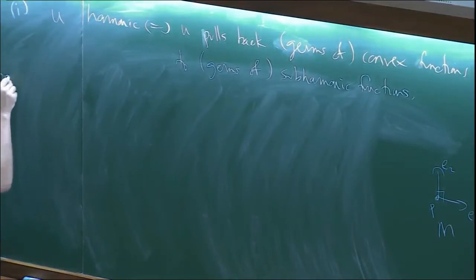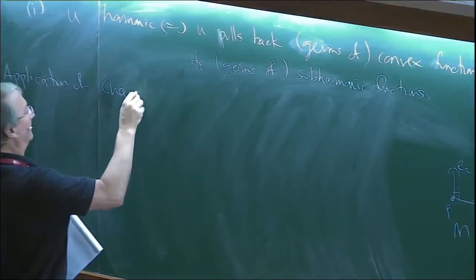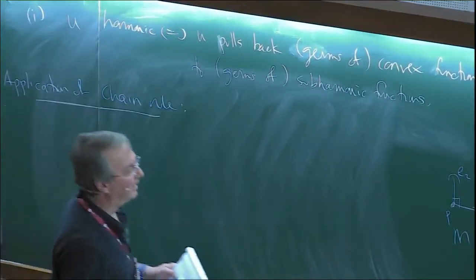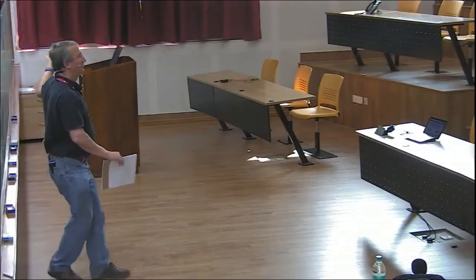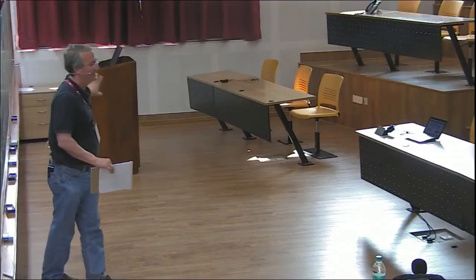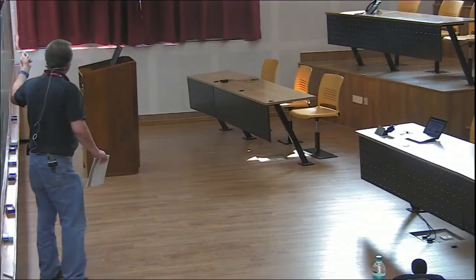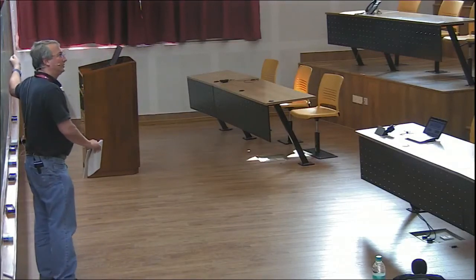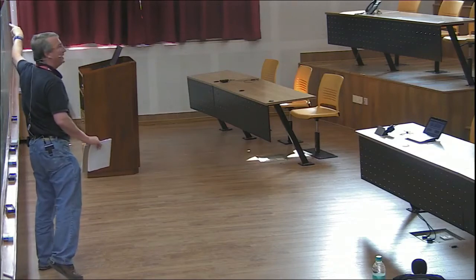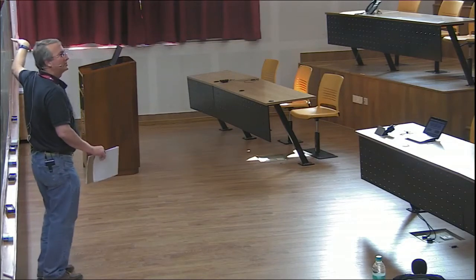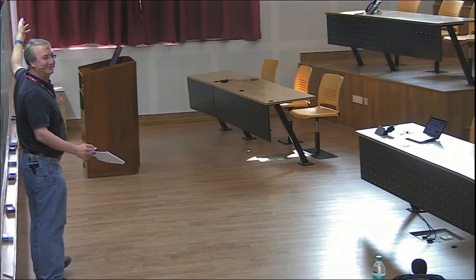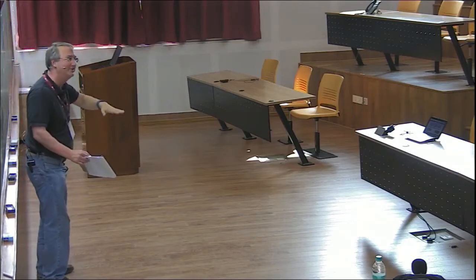That's a relationship between the geometry on N — convex functions — and the function theory on M — sub-harmonic functions. So that's another characterization of harmonicity. Let me do an application of the chain rule. The chain rule allows you to pick a good geometric function on N and analyze it by doing differential equations; ask a PDE expert what you found, get an estimate, make sure you've checked the ODEs first, and read off theorems.